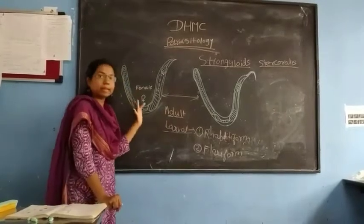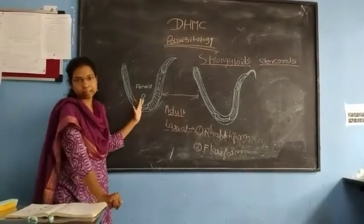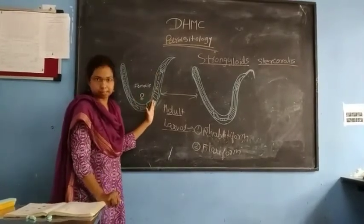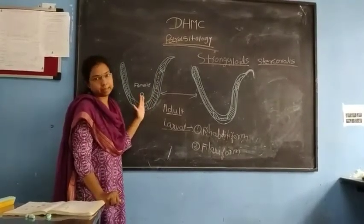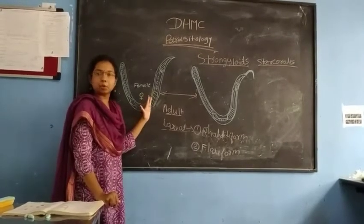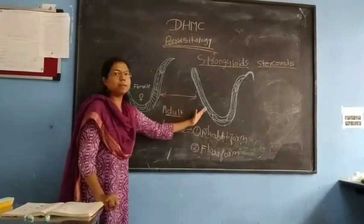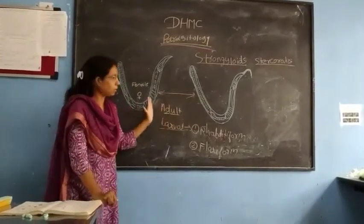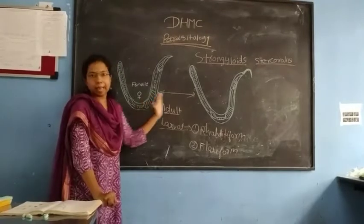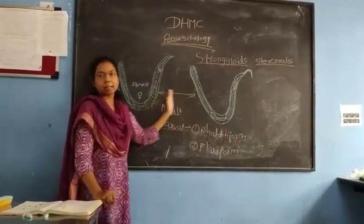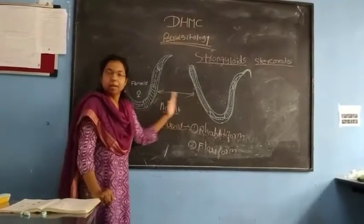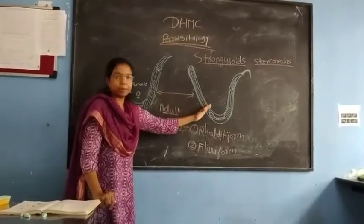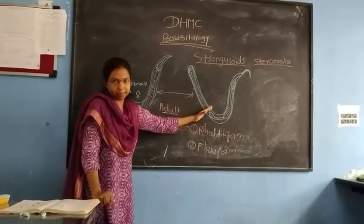The female parasite is larger as compared to the male. The characteristic feature of the female parasite of S. stercoralis is that this female has two uteri. These two uteri are the characteristic feature of S. stercoralis female. And after fertilization, there will be death of the male parasite.